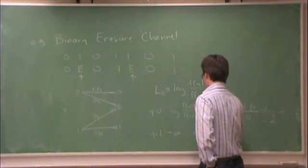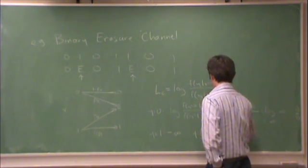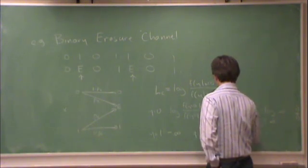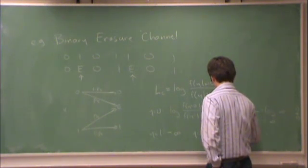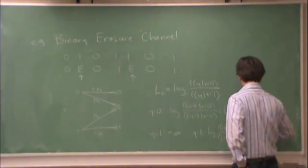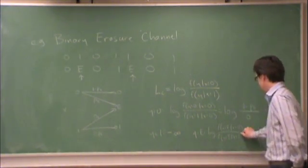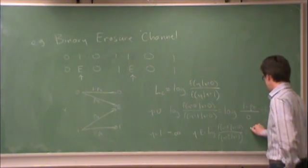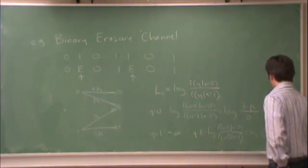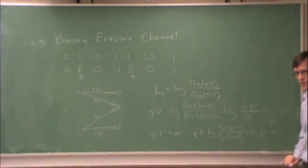How about y equals e? Here I have log f of y equals e given x equals 0 divided by f of y equals e given x equals 1, which is the numerator is log PE divided by PE which is log of 1 which is 0.